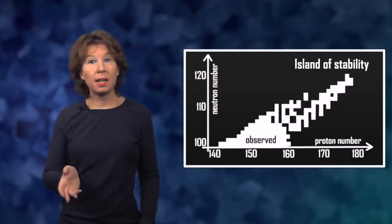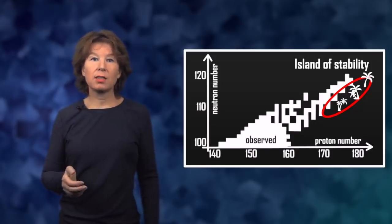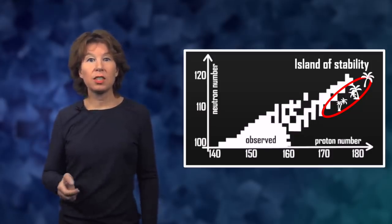Because it looks like an island if you put each nucleus on a graph where one axis is the number of protons and the other axis is the number of neutrons. Just exactly where the island of stability is though is not clear and predictions have moved around somewhat over the course of time.